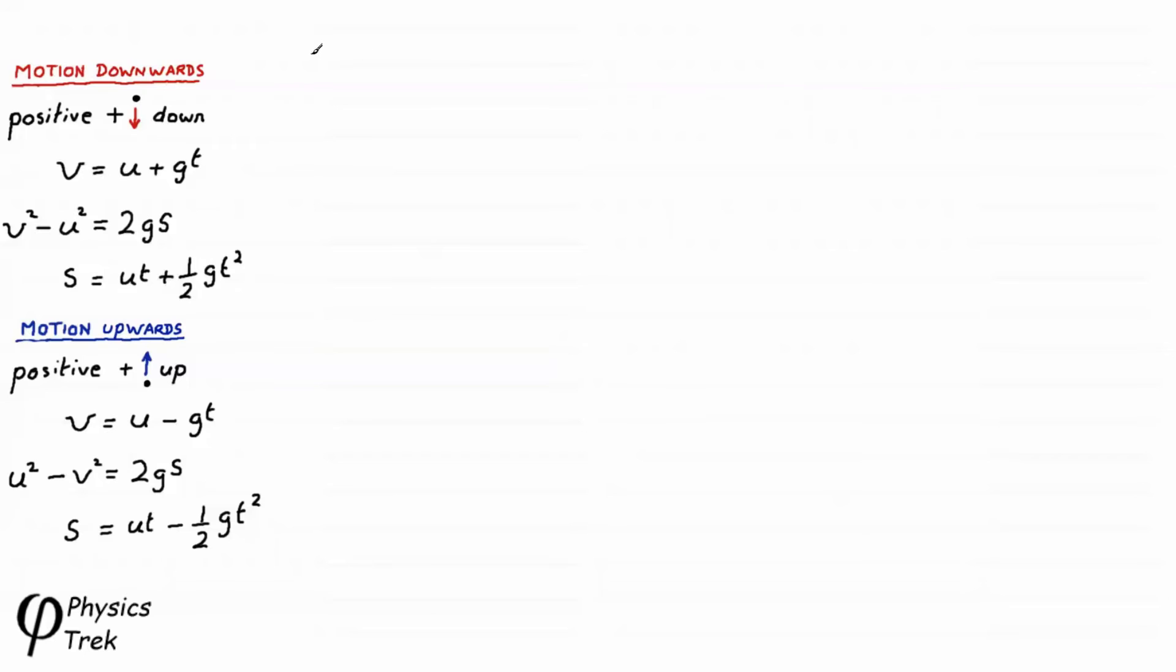And now to the first part of the question. This is really very straightforward. We have v1 is equal to u1 plus gt. Putting the numbers in, u1, the initial velocity is zero, g is 9.8, and t, the time to fall a vertical distance, is 2.5 seconds. And this comes to 24.5 meters per second.